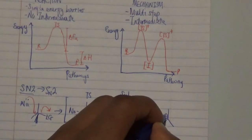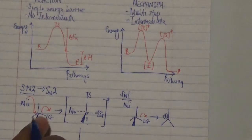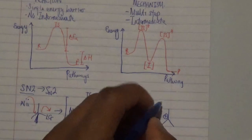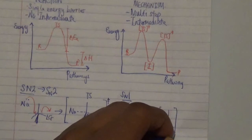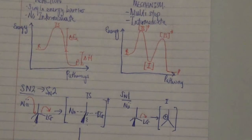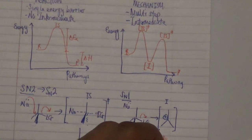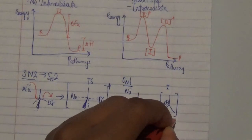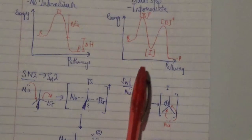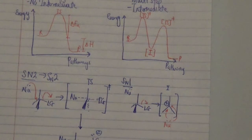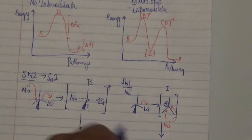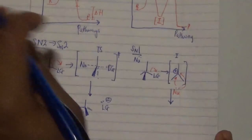Note that in SN1 there is a charged intermediate, whereas in SN2 there is no charge in the transition state because no intermediate forms. After the carbocation intermediate is formed, the nucleophile comes in and attacks either at the front or at the back of this intermediate, forming a partial charge in a new transition state, which then leads to the final product.